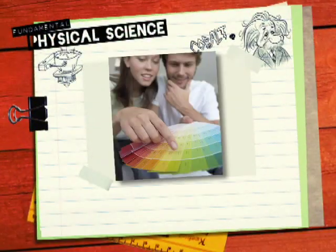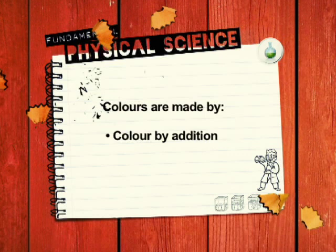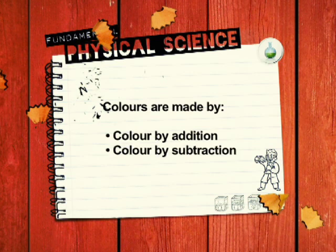In this presentation we shall look at how colours are combined to bring about the range of colours we can see around us. The different colours in nature can be made in two ways: by combining light of different wavelengths, known as colour by addition or additive colouring; or by removing some wavelengths of white light so that only the wavelengths of certain colours remain, known as colour by subtraction or subtractive colouring.